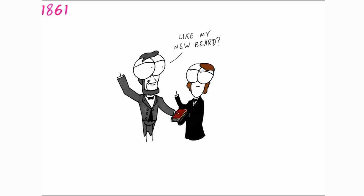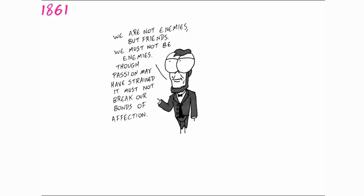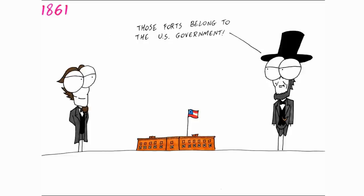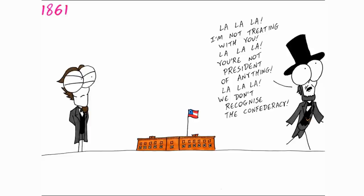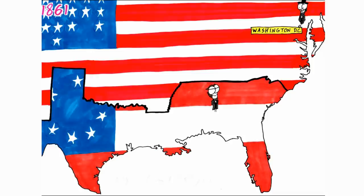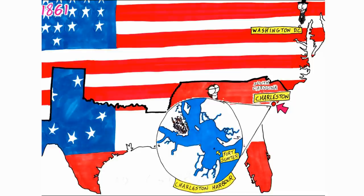Lincoln was sworn in as president on March 4th, 1861, and he insisted on the perpetual union, stating any secession was legally void. He wasn't going to enforce federal law where it wasn't wanted, but he would use force to maintain federal property. The Confederacy offered to pay for the property, but Lincoln wouldn't treat with them as it would give some recognition to the Confederate government. Lincoln insisted U.S. forces hold on to any forts they still had within the Confederacy.